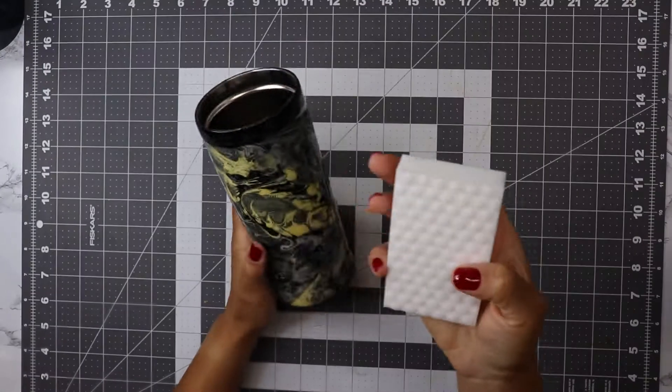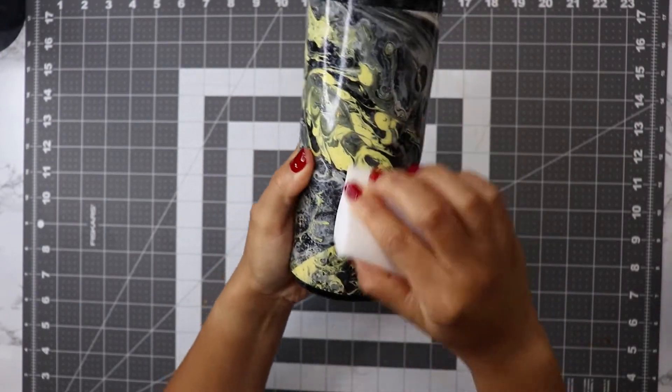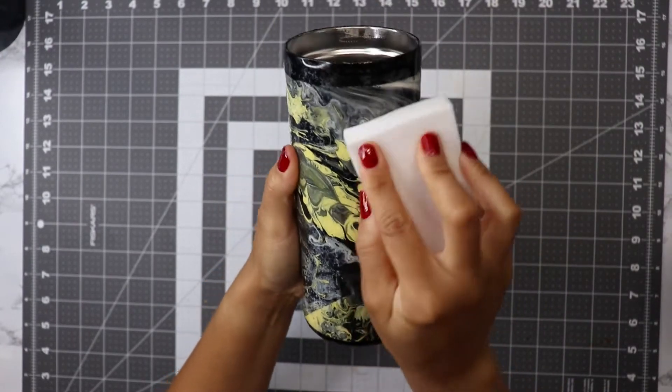All you need is a melamine sponge and a little bit of water. Add a little water to the sponge and just buff off that white haze.